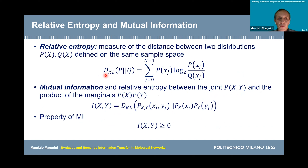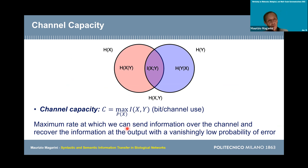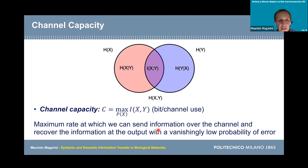The relative entropy, also known as the Kullback-Leibler divergence, measures the distance between two distributions defined on the same sample space. The mutual information can be expressed in terms of relative entropy. The importance of mutual information is that by maximizing it over all input distributions, we are able to find the capacity of the channel.